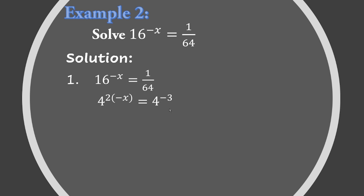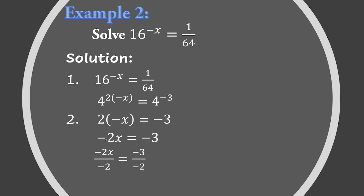So 16 becomes 4 squared, giving us 4 raised to (2 times negative x) equals 4 raised to negative 3. Now they have the same base, so we equate the exponents. The left side exponent is 2 times negative x, which simplifies to negative 2x, and the right side is negative 3. So we have negative 2x equals negative 3.